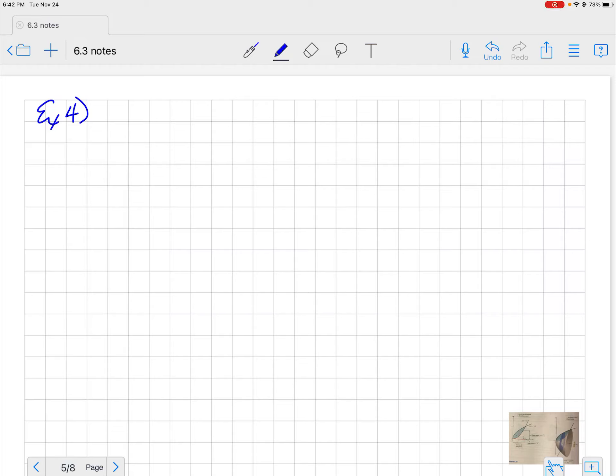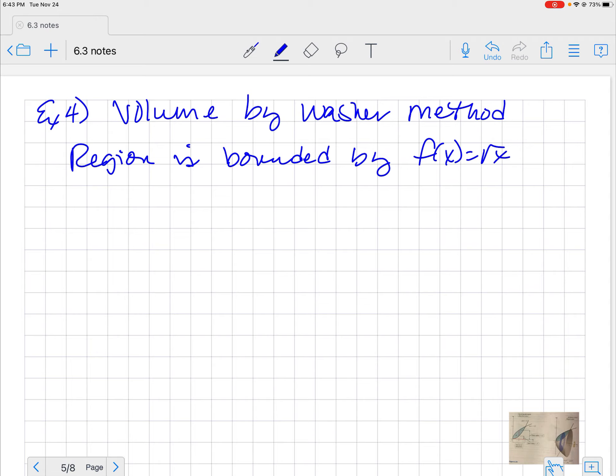All right, let's do some examples of this. We're going to take the volume by the washer method. It's example four. Okay, now, here I'm going to look at the region bounded by these graphs where f of x is equal to the square root of x and g of x is equal to x squared.